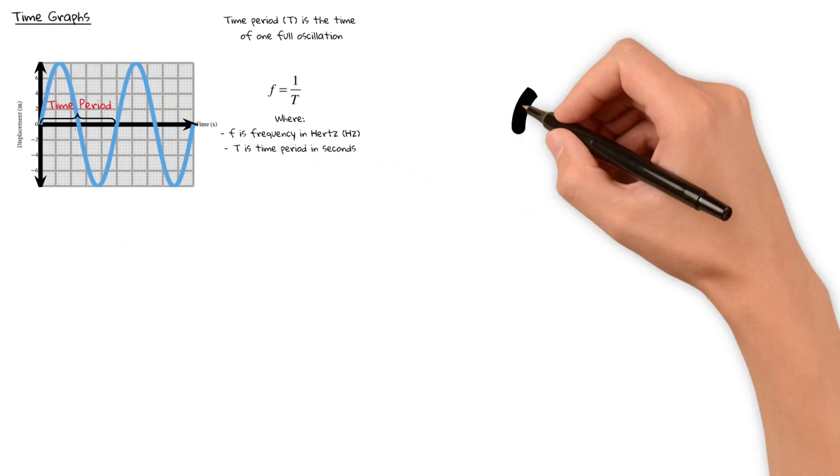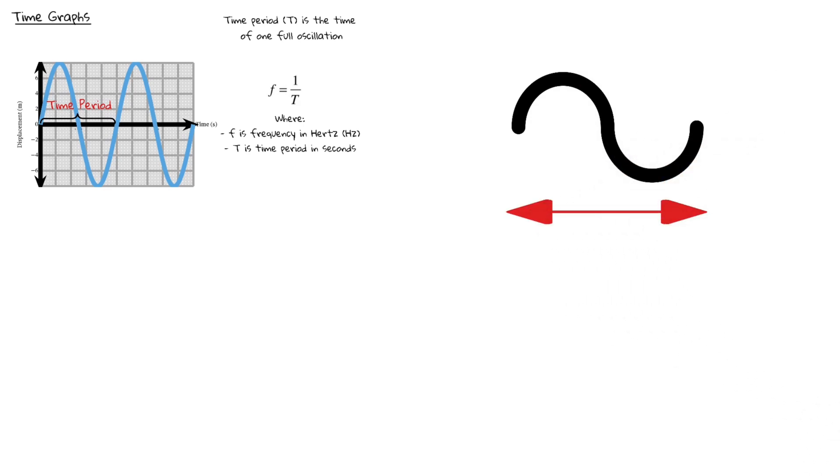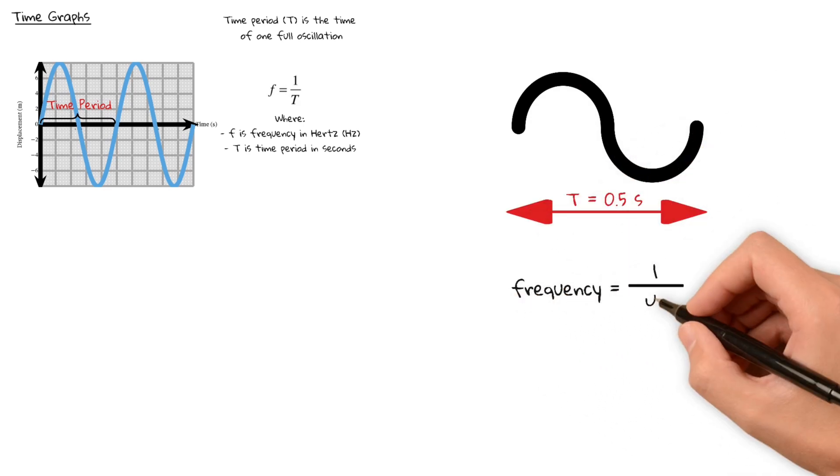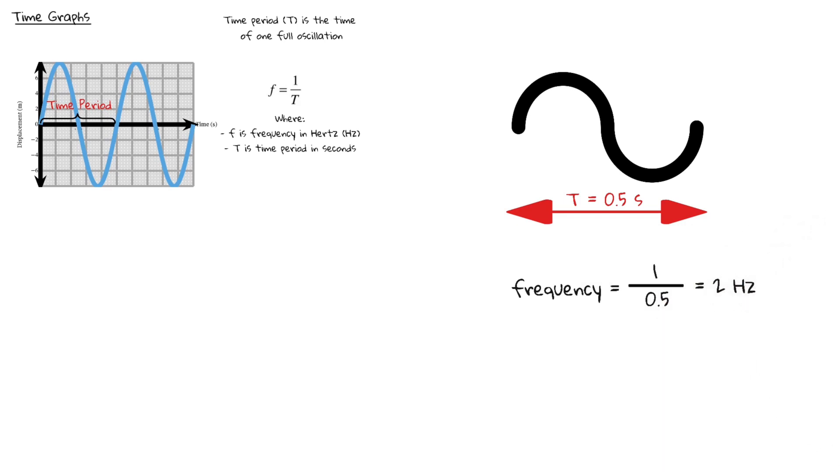Frequency tells us how many oscillations happen per second. So if a wave has a time period of 0.5 seconds, it has a frequency of 2 hertz, meaning 2 vibrations per second.